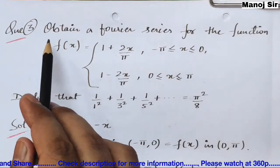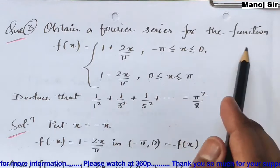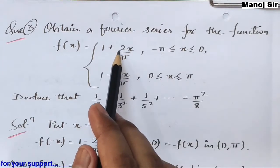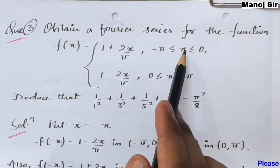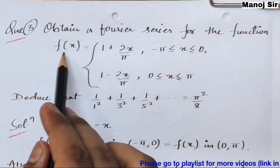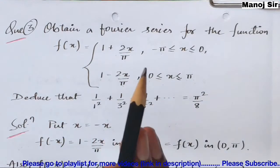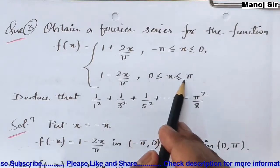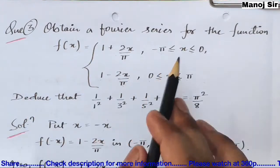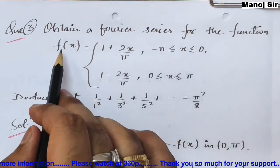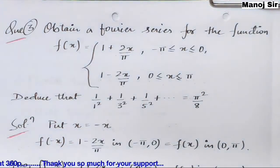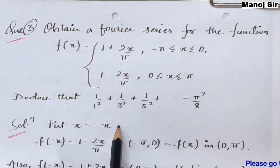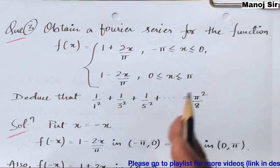The question says: obtain a Fourier series for the function f(x), which is 1 + 2x/π when x is in the range minus π to 0, and f(x) = 1 − 2x/π when x is in the range 0 to π. After solving this we also need to deduce that 1/1² + 1/3² + 1/5² + ⋯ = π²/8.